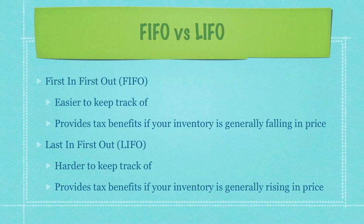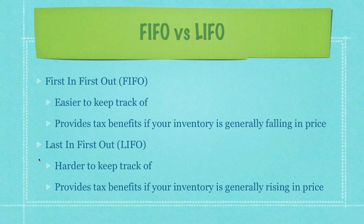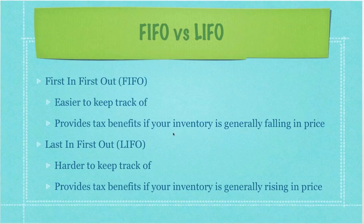Or you can handle this inventory change with last in first out. This is harder to keep track of because you're more than likely going to continue purchasing that inventory and you're going to have inventory sitting around that you purchased at a lower price — meaning $35, as we mentioned before. However, last in first out provides tax benefits if your inventory is generally rising in price, and this is most businesses. So just remember: first in first out means you get rid of the cheap $35 paper first, then move on to the $40 paper. Last in first out means you get rid of the new $40 paper first, and then eventually get to the $35 paper.